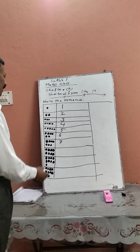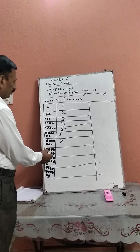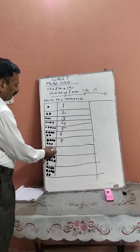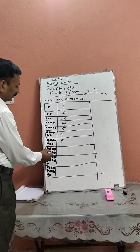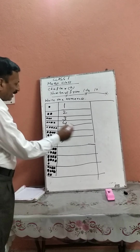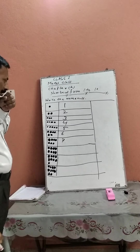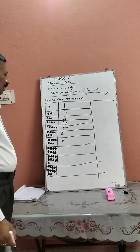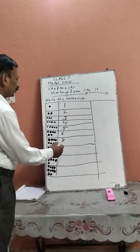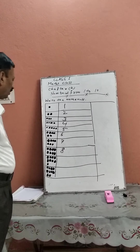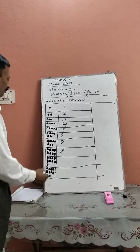Next, there are eight objects — 1, 2, 3, 4, 5, 6, 7, 8 — in the box, therefore you should write the number 8.